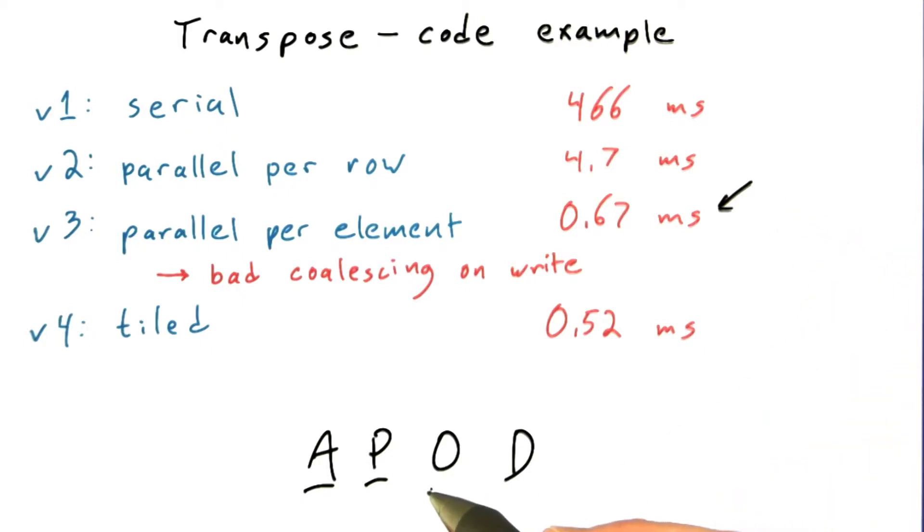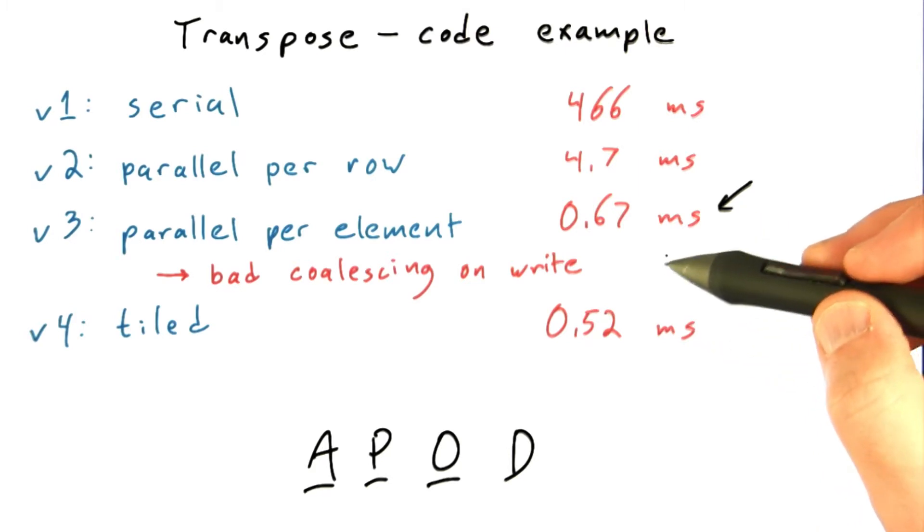If so, then we can start thinking about optimizing it, and that was the next thing we did. We looked at the performance here. We saw that we were getting pretty poor DRAM utilization, and we diagnosed that the problem must be that our global stores were getting bad coalescing. In other words, when we were writing the output matrix, we were getting bad coalescing in those accesses to global memory.